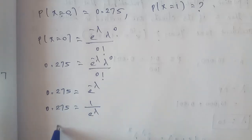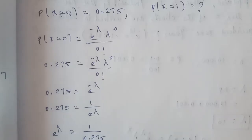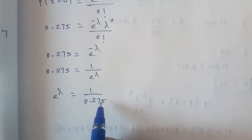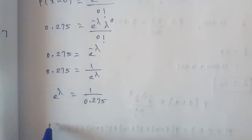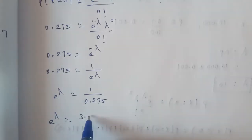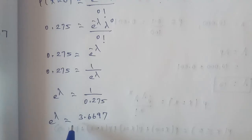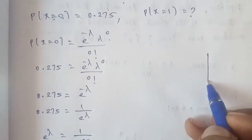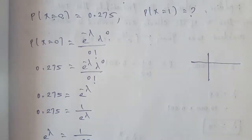Therefore, e power of lambda is equal to 1 divided by 0.2725, which equals 3.6697. We check this value in the exponential table to find the corresponding lambda value.